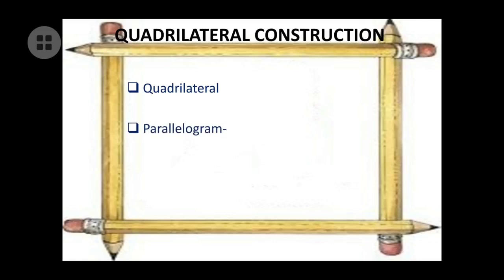You will also be learning one important type of quadrilateral: the parallelogram. The important property of a parallelogram is that opposite sides are equal and parallel. The difference between a rectangle and a parallelogram is that for a rectangle the angles are 90 degrees, whereas for a parallelogram they are not.